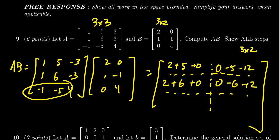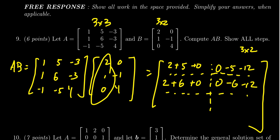For row three times column one we get negative one times two which is negative two, negative five times one which is negative five, and then four times zero which is zero.